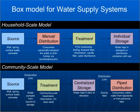This slide gives a general overview of a water supply system at a conceptual level. We've chosen to break apart our understanding of water supply systems into two categories: a household scale model and a community scale model. In both models, you have a source — be it a well, a spring, surface water, or rainwater catchment.